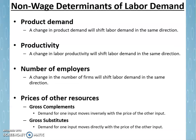Let's wrap up this section with non-wage determinants of labor demand. What we've done so far is really build the demand side of the labor market, and we've talked about, mostly, how wage changes affect labor demand. But there are non-wage determinants. In our model, you can think of this as shifting our labor demand curve, either to the right, meaning more labor demand, or to the left, meaning less labor demand.